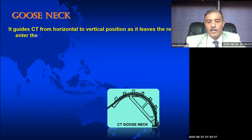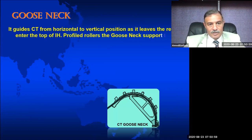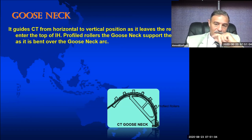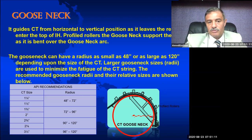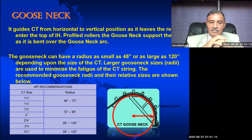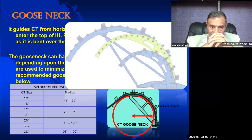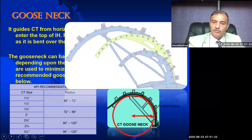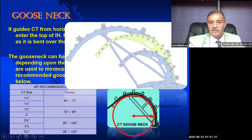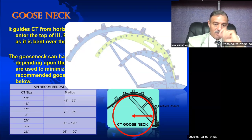This is the gooseneck on top of the injector. The radius of this gooseneck depends on the pipe size you are using — we have a table that tells us the radius corresponding to the pipe diameter. What you see here are different sizes of gooseneck: this one is bigger, this one is bigger still — depending on the pipe size you are using.